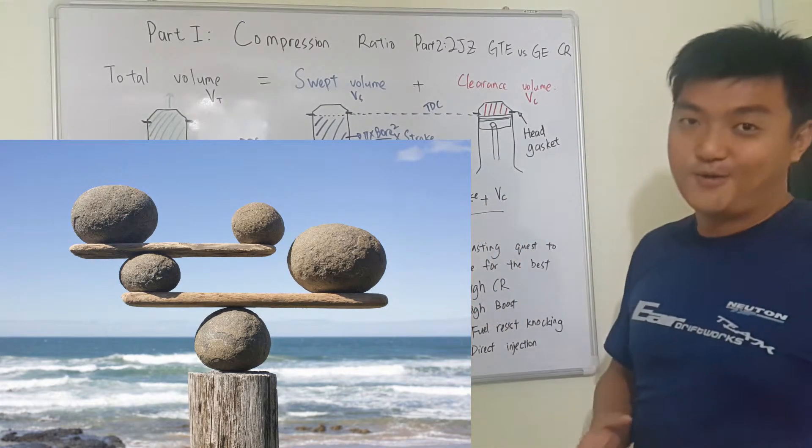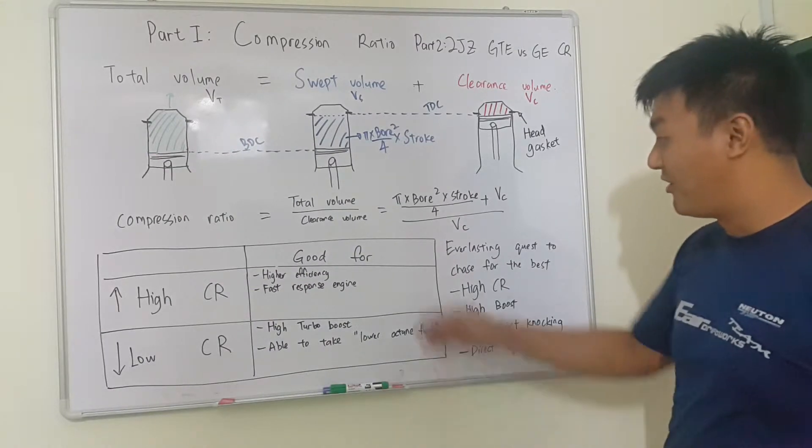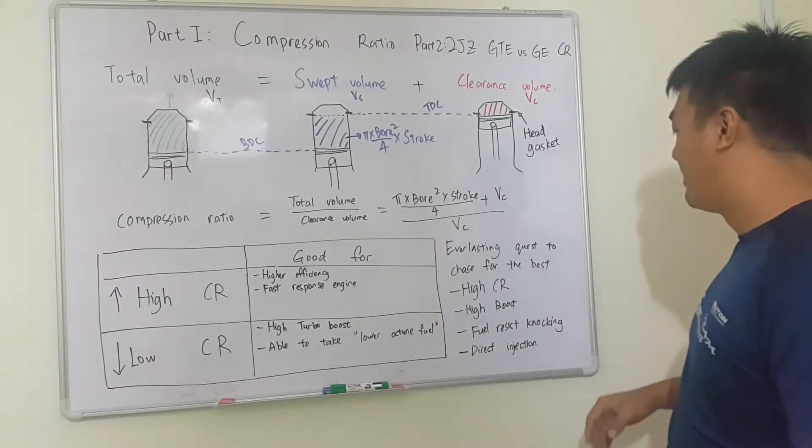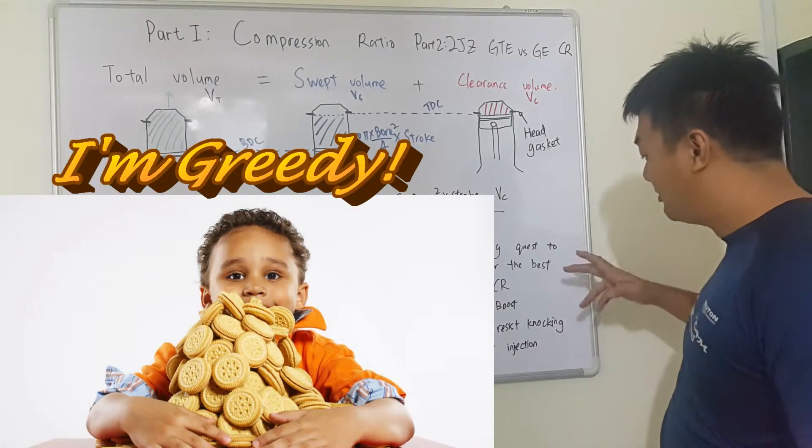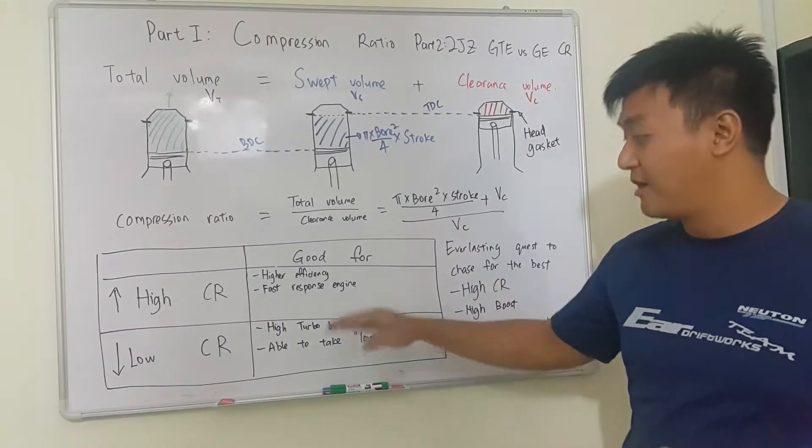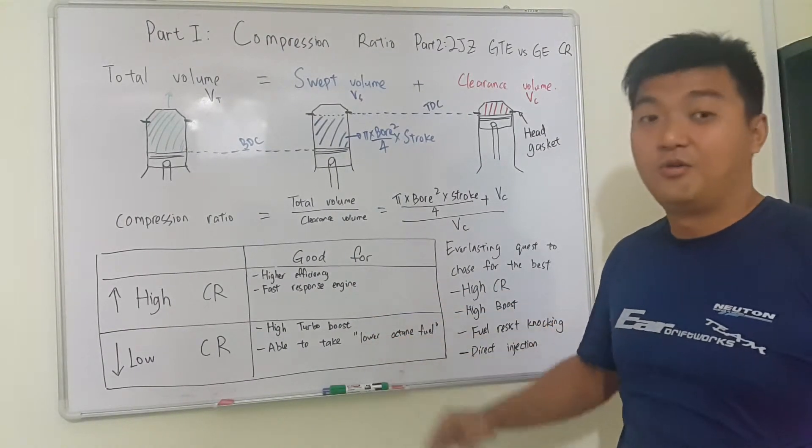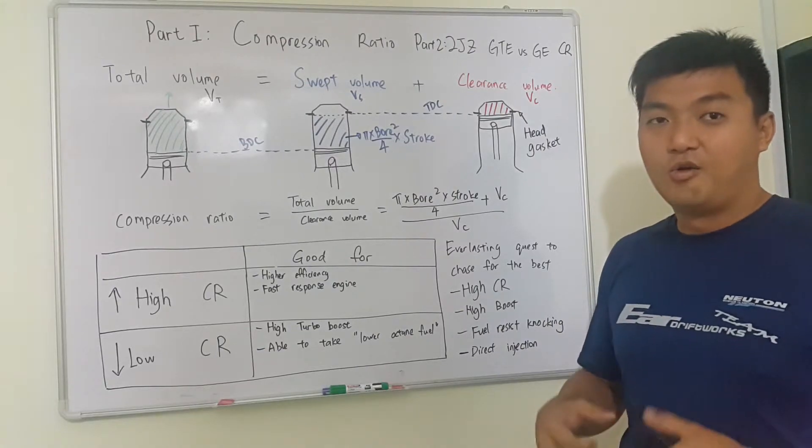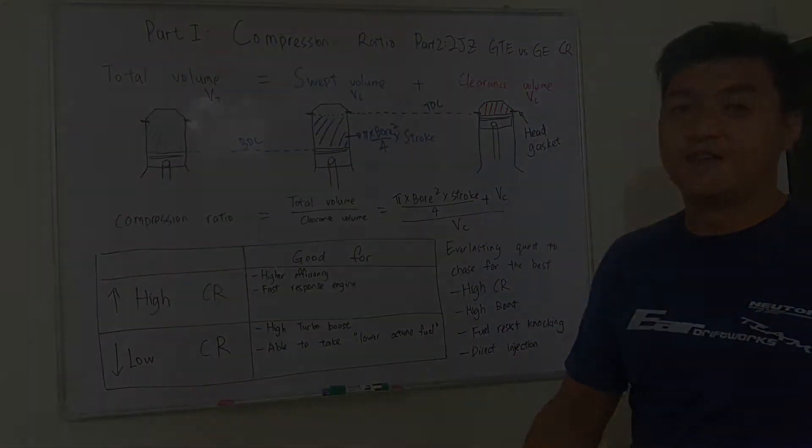So this tool is a balance. All of these things we also want. We want high boost, we want high compression ratio for fast response, we want higher efficiency, we can step fewer. We want to resist knocking, we don't want knock. There are so many ways that we can maintain high compression ratio and high boost and able to take low octane fuel. But this is what we in motorsports are always chasing for.